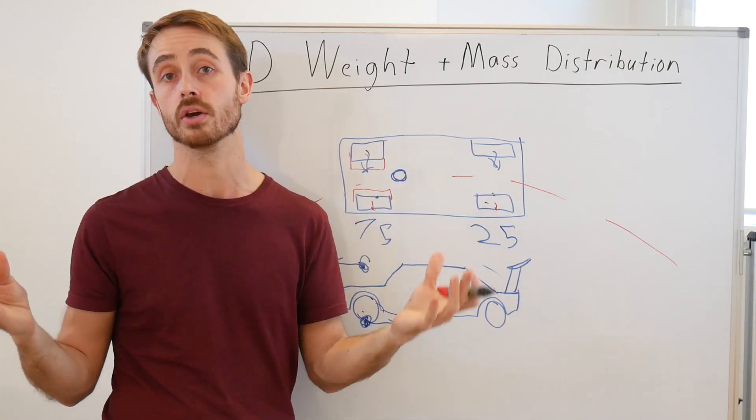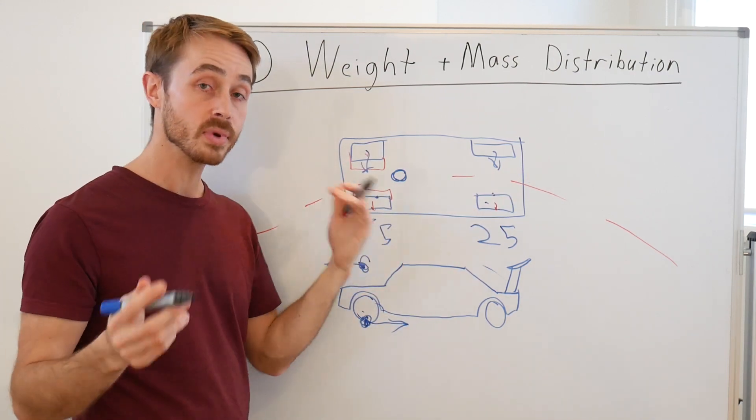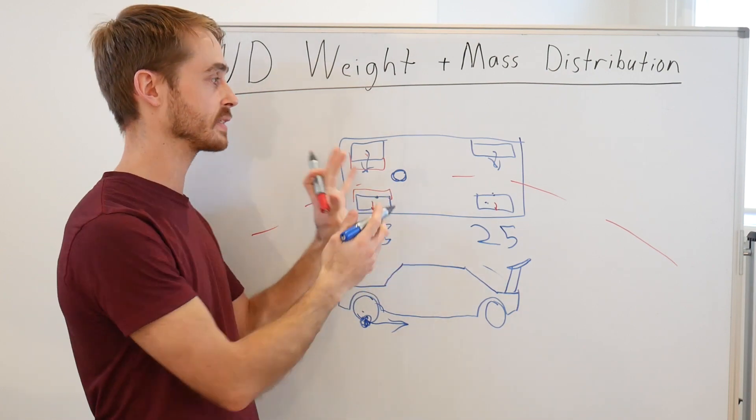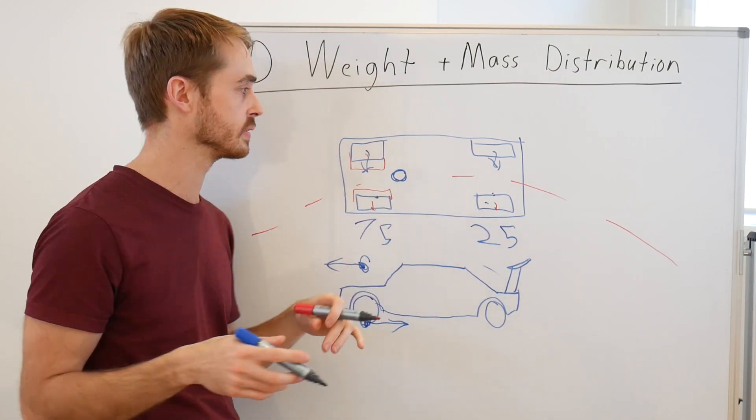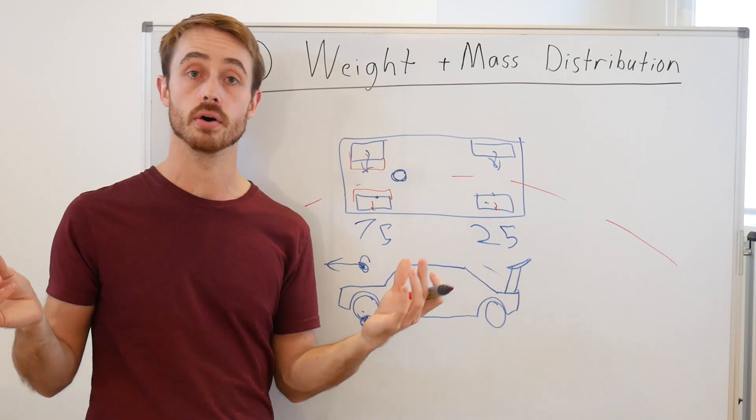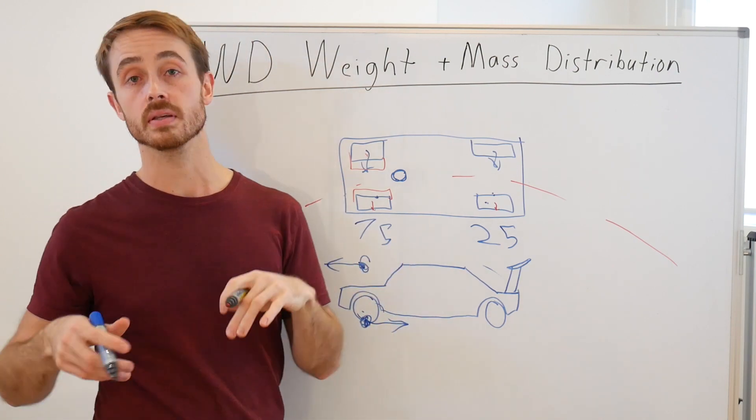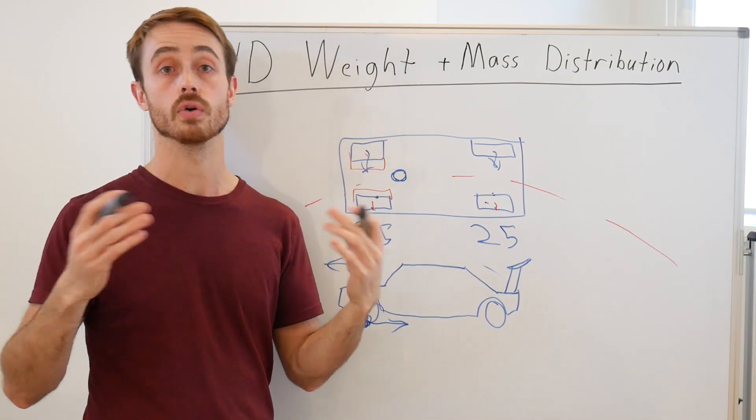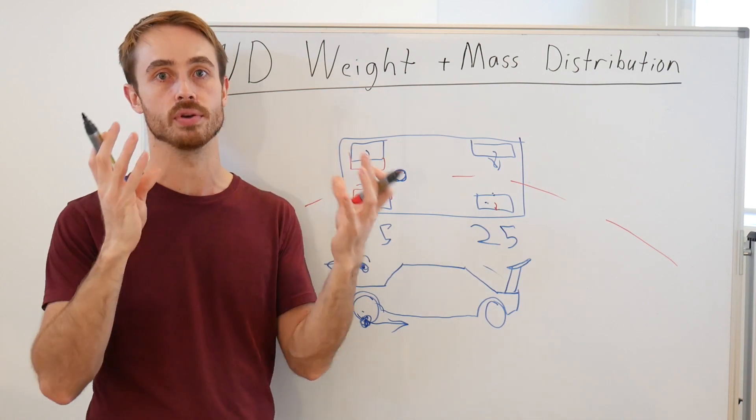So the net result of that is that these tires would have to be three times as wide as that if we're just manipulating contact patch through width. So we end up with our front-wheel drive car with really massive front tires and really tiny rear tires. And at first glance that's actually alright.